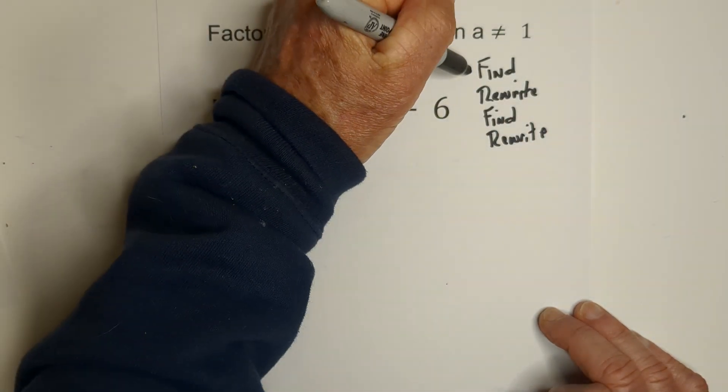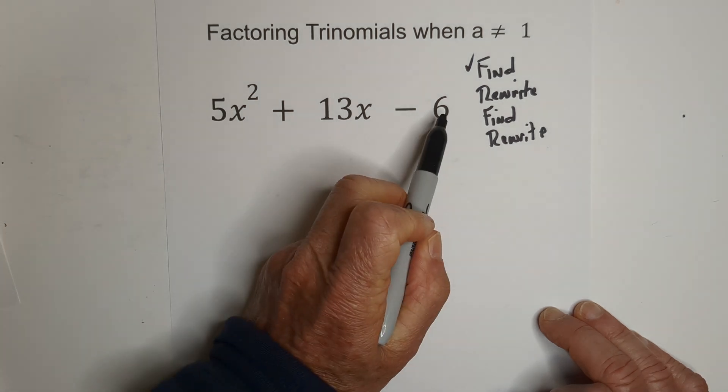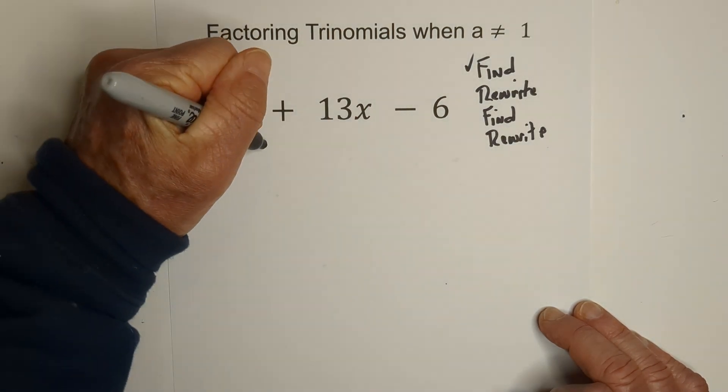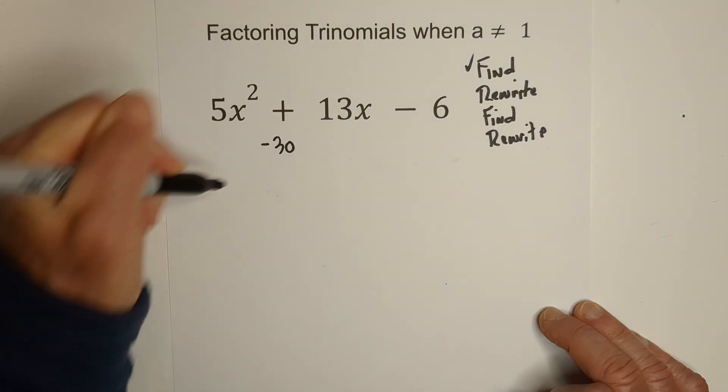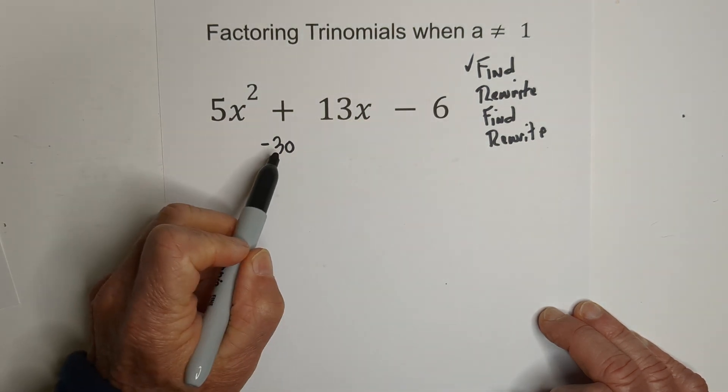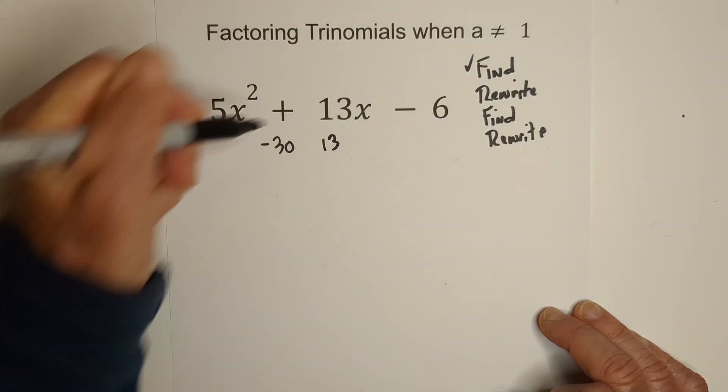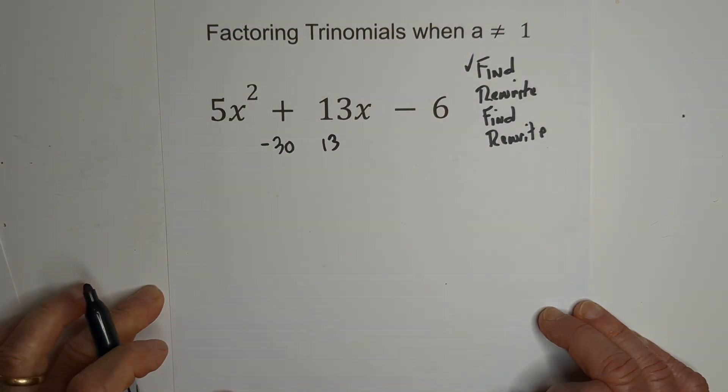First, we're going to find. What we're going to do is we're going to multiply the first term times the third term, which is 5 times the negative 6 is negative 30. We then are going to find the factors that when they add together equals the middle term or the second term. So, that's 13.